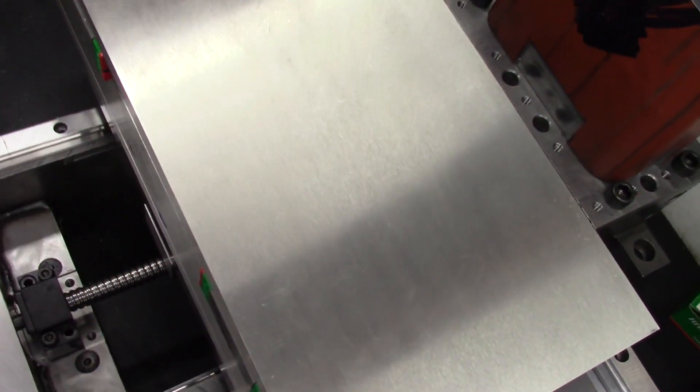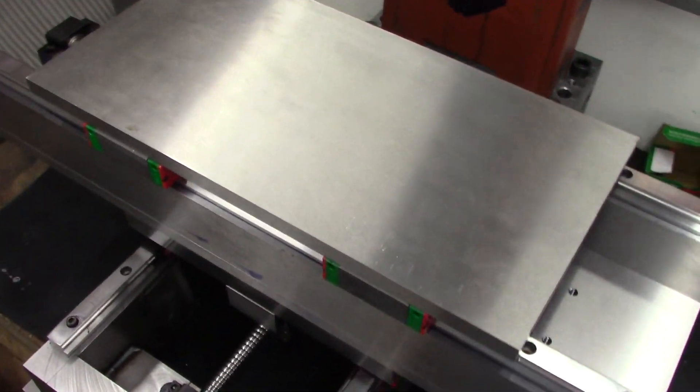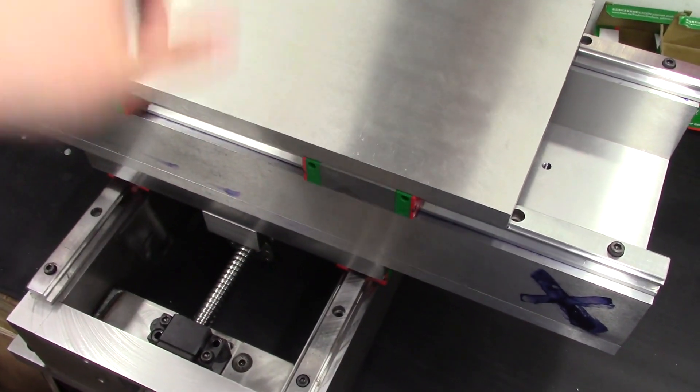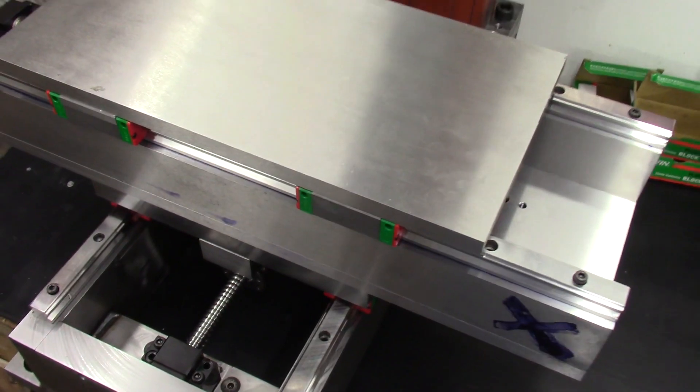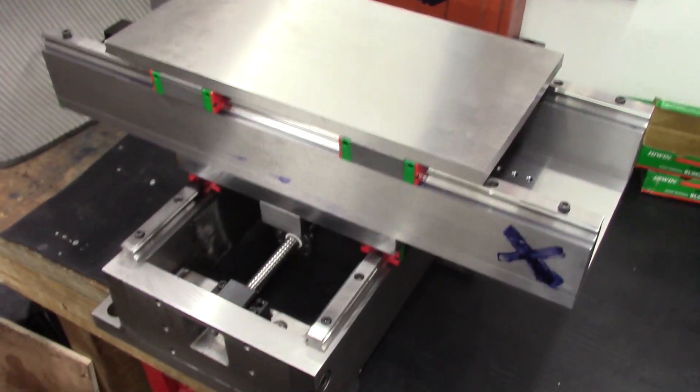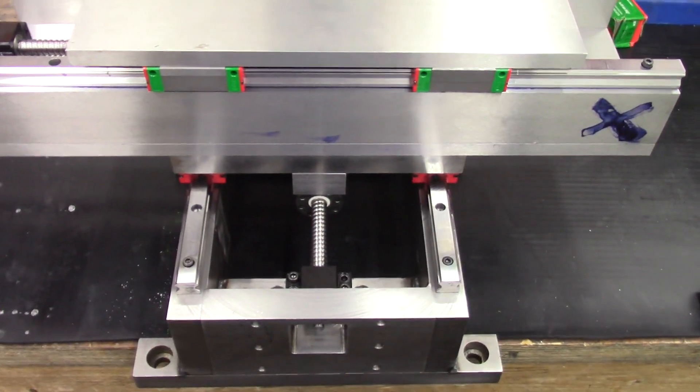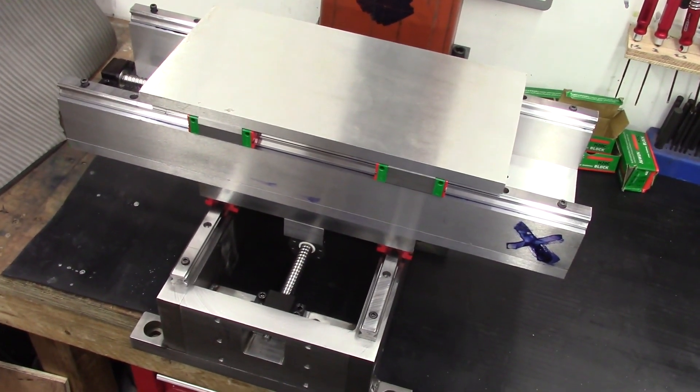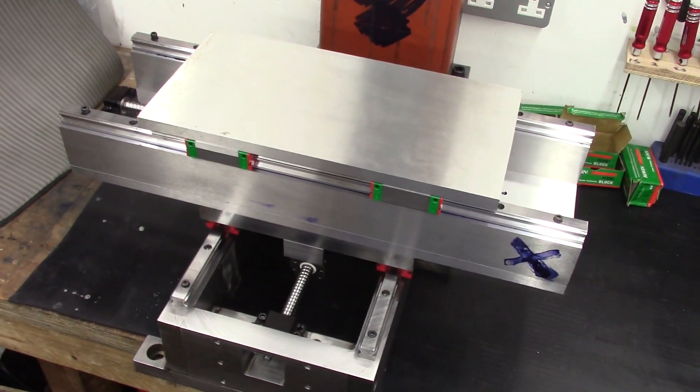The working envelope of the machine should be about 200mm in the Y, 300mm in the X, and then another 300mm in the Z. So a pretty small working envelope, but this is pretty much the biggest machine I can make with the tools I have available. Plus the type of things I do, nothing really falls out of that working envelope, so it should be fine.